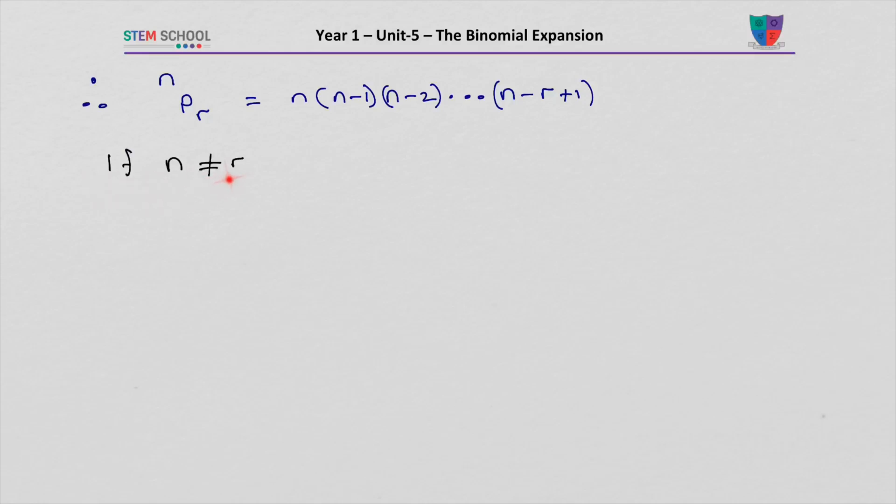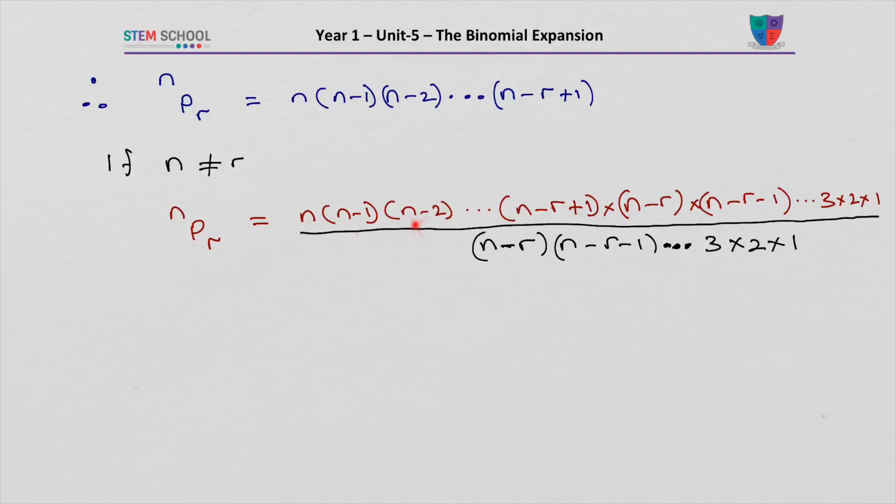If n is not equal to r. So if we continue the factorial here, now we go all the way. We didn't stop there. Now we go all the way to 1.